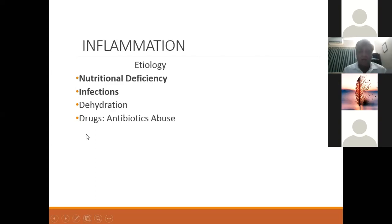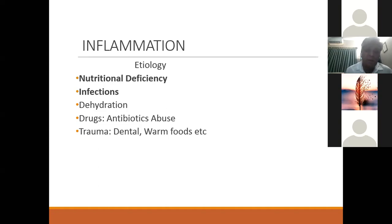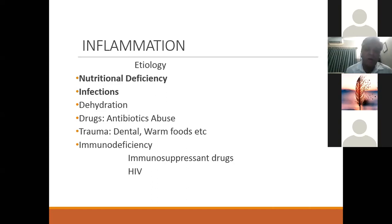Drugs, especially antibiotics, can cause ulceration in the mouth when given for a prolonged period or when not indicated. Patients come having received antibiotics for probable viral fever, and on examination the mouth is full of multiple small aphthous ulcers — this is one of the predisposing factors. Immunodeficiency is a rare cause; someone on immunosuppression drugs like chemotherapy, or with HIV, or diabetic patients may also be affected.